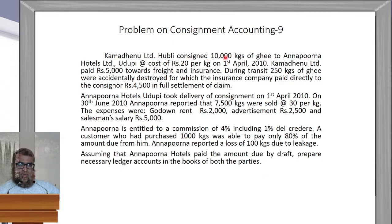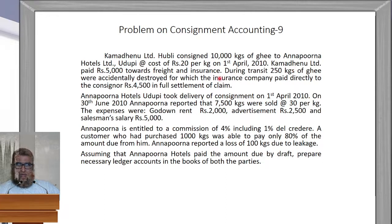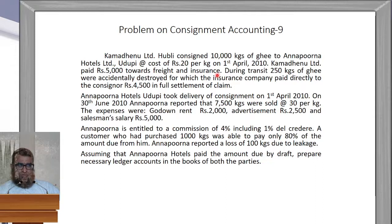The goods sent on consignment is 10,000 into 20, which equals 2 lakh rupees. Kamadenu Limited paid Rs. 5,000 towards freight and insurance. This is an expense of the consignor, so it will come in the consignment account as 'By Bank Account.'